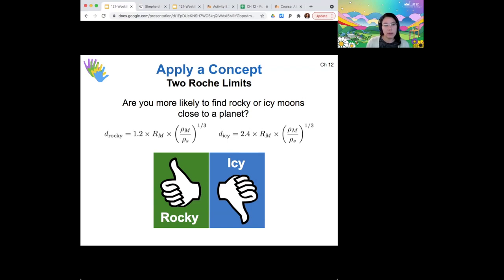All right, I'm seeing the most votes for rocky. So yes, there's actually two reasons for this. One is that the Roche coefficient is smaller for the rocky body. So that would contribute to this overall Roche limit being smaller, meaning closer to the planet.